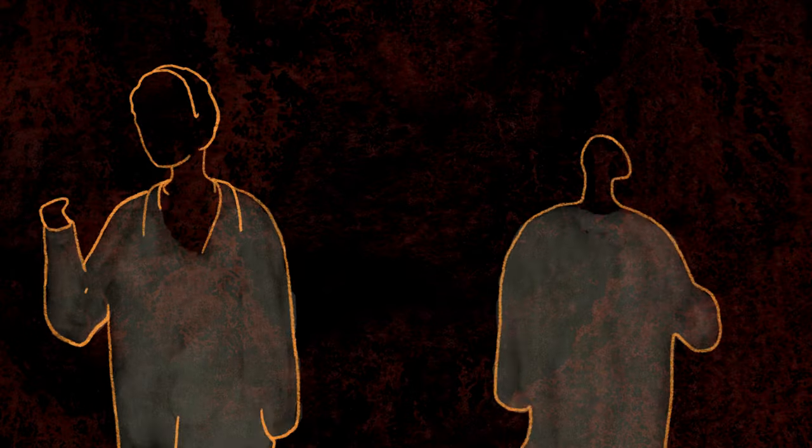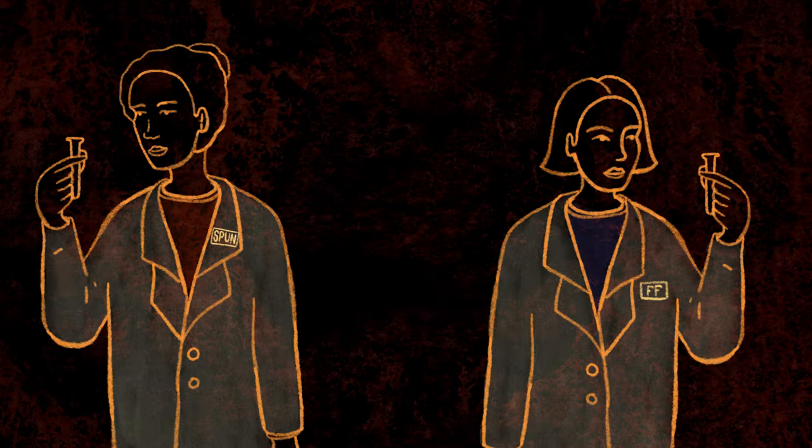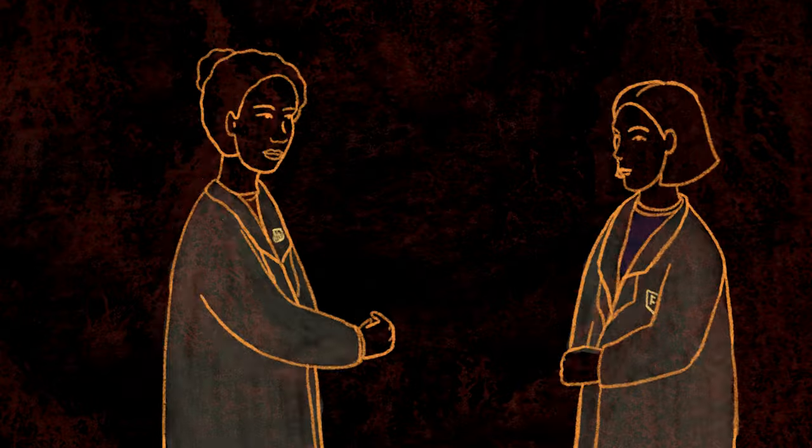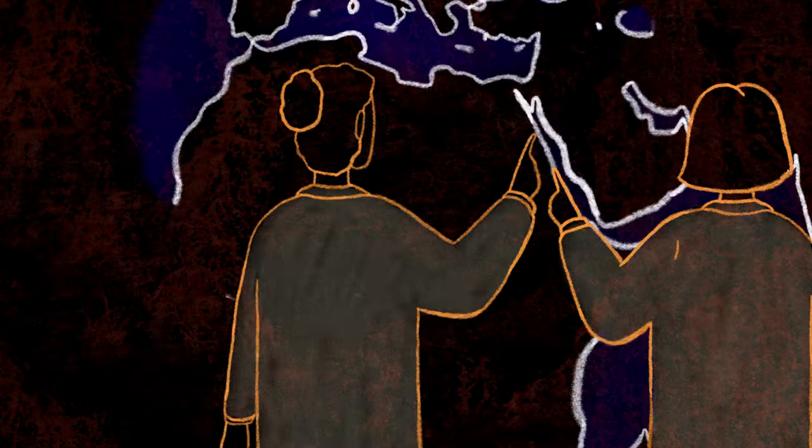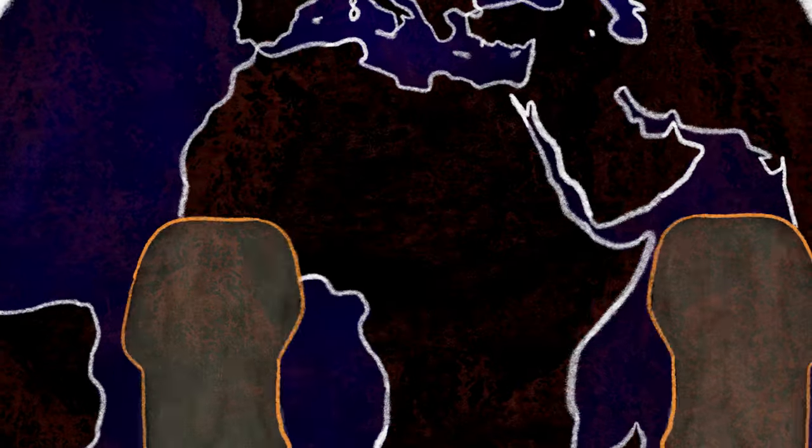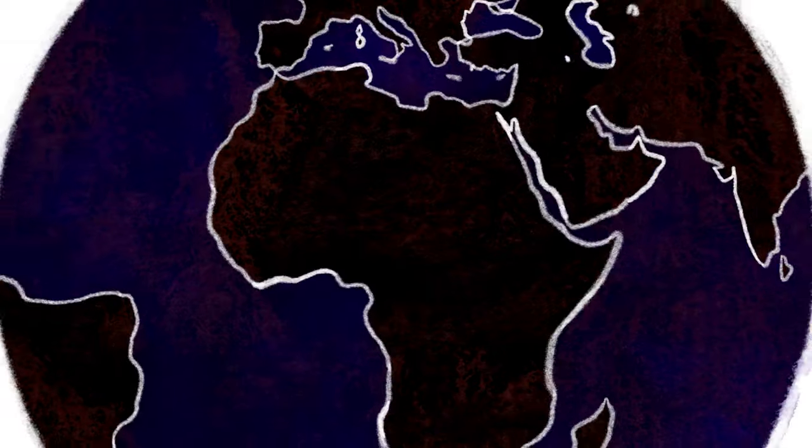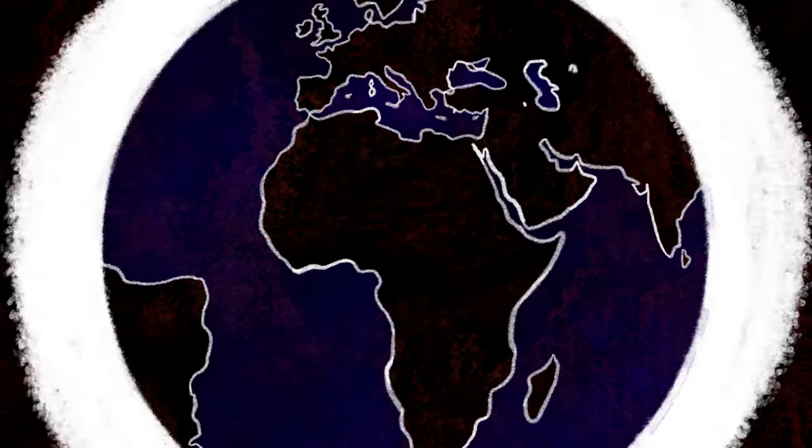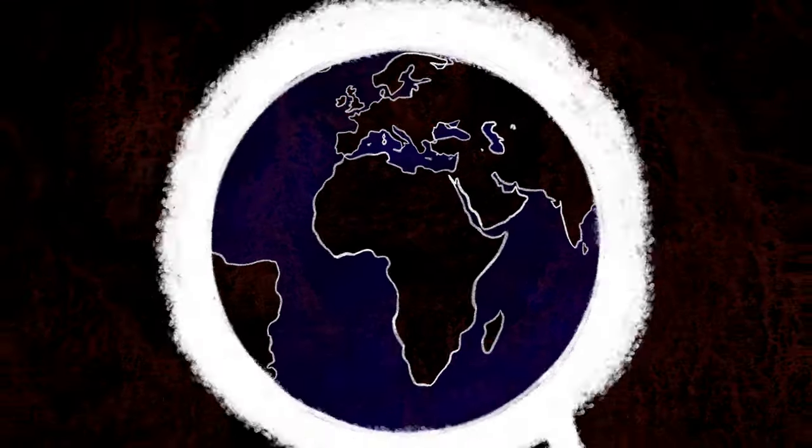Organizations like SPUN and the Fungi Foundation are leading a massive global sampling effort to create open-access maps of the planet's mycorrhizal fungal communities. These maps will support conservation projects and policies that aim to halt their destruction.